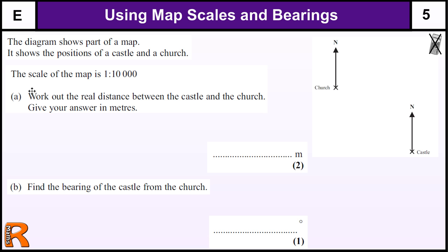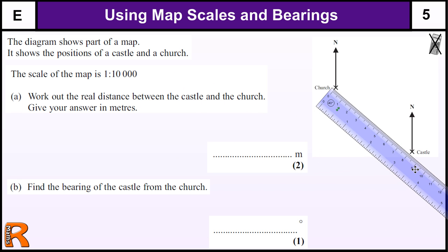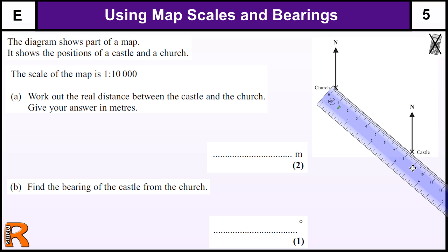This question here is asking, on a map scale of 1 to 10,000, so that means for every one centimeter I measure, the real scale is 10,000 times bigger. So if I bring my ruler in to work out the distance by measuring it, that's quite small on there, but it should be measured at 8.2 centimeters.